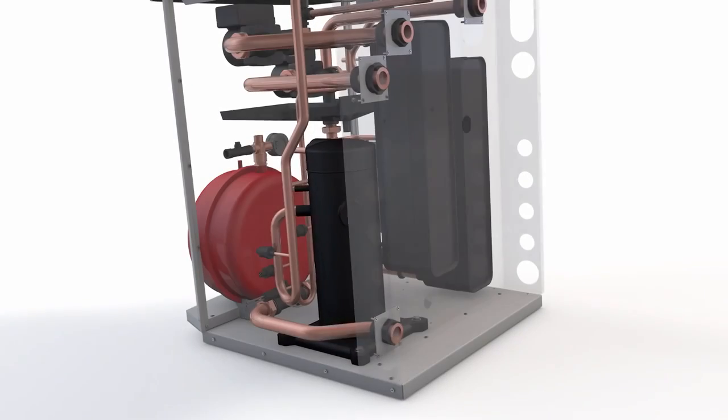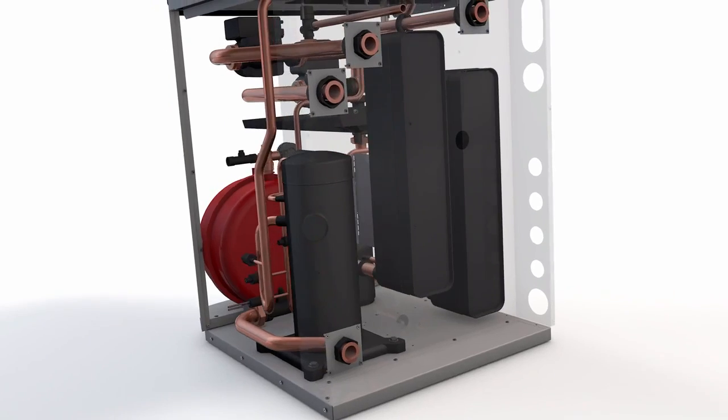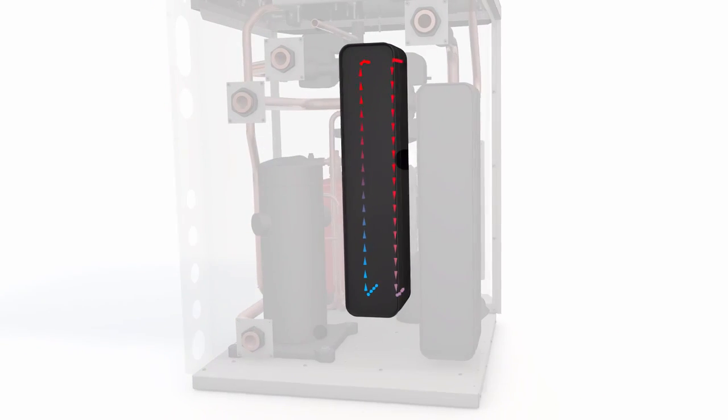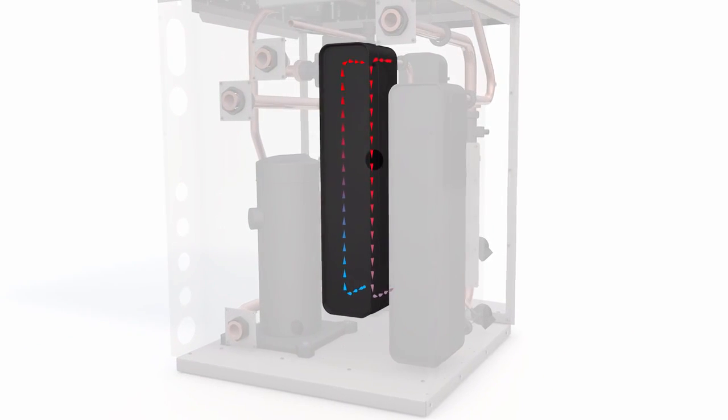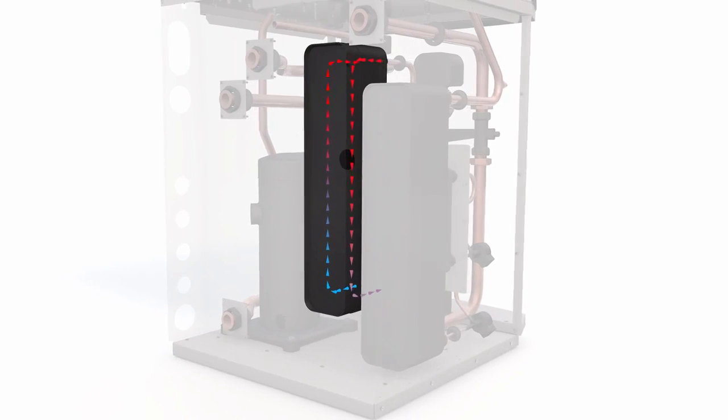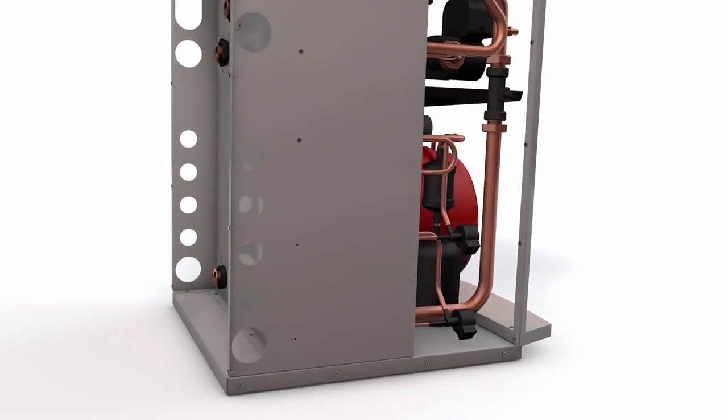While retaining a COP efficiency of nearly 300%, the plate heat exchanger, with its large surface areas, maximizes the heat extracted from the ground and efficiently converts to usable heat.